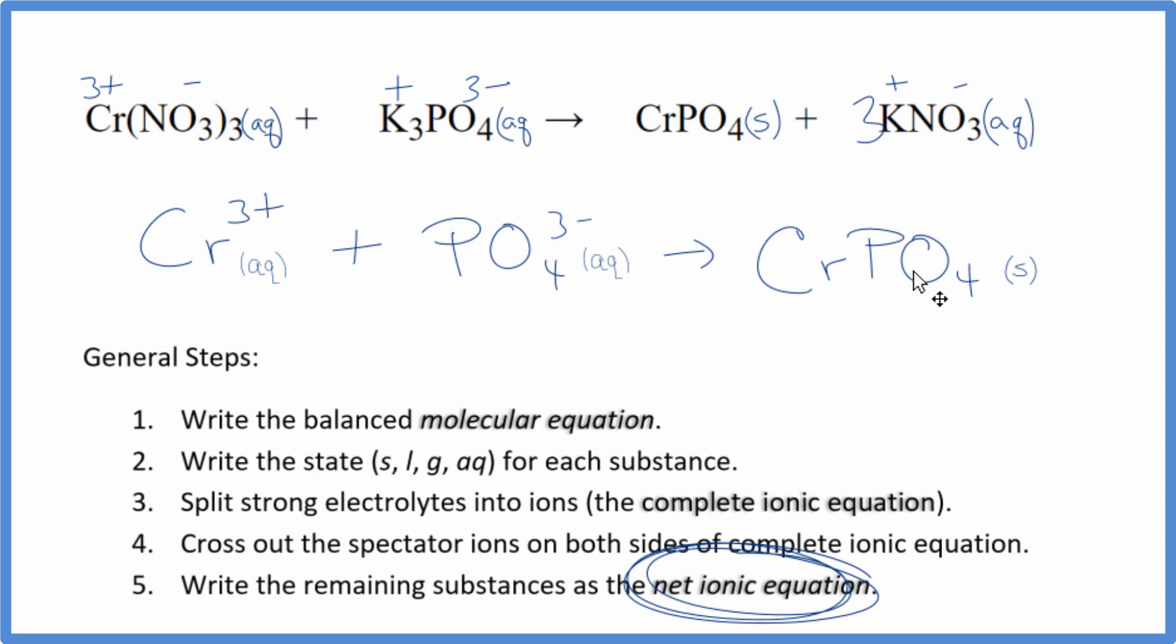And if you count the atoms up, they'll be the same as well. This is Dr. B with the balanced net ionic equation for chromium three nitrate plus potassium phosphate. Thanks for watching.